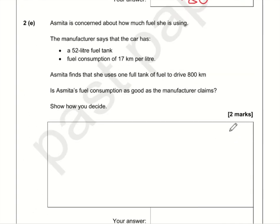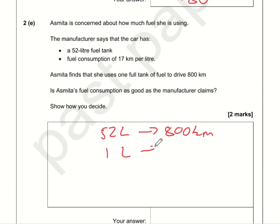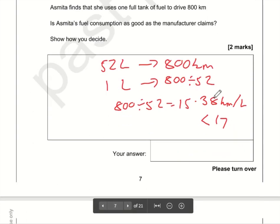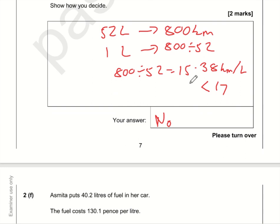For part e, one full tank of fuel means she can drive 800 kilometres, and the tank holds 52 litres. So per litre that would be 800 divided by 52, which is 15.38 kilometres per litre. That is less than the stated fuel consumption of 17 kilometres per litre. So is Asma's fuel consumption as good as the manufacturer claims? No — it's 15, not 17.